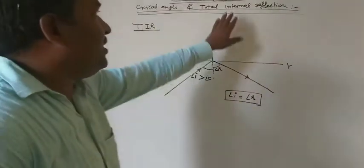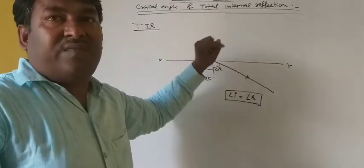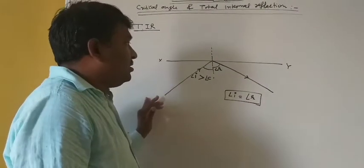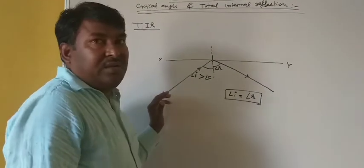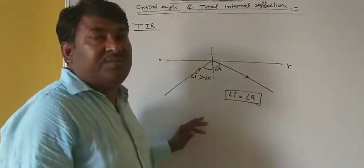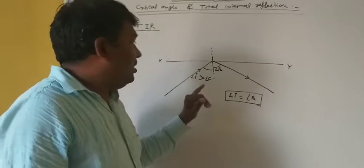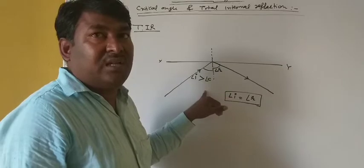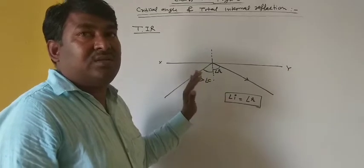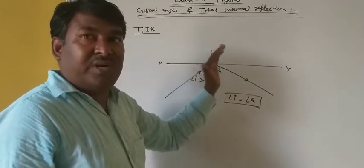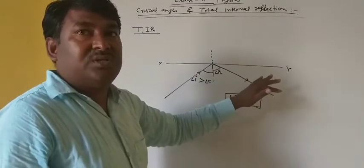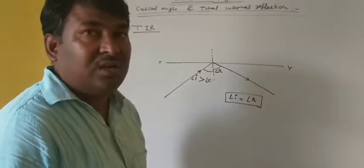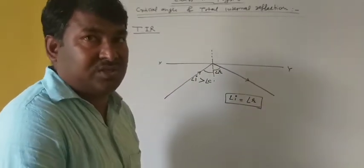So what is TIR? Total internal reflection is the phenomenon in which when a light ray incident from a denser medium at an angle greater than the critical angle, its total part reflects back into the same medium. This is called total internal reflection.